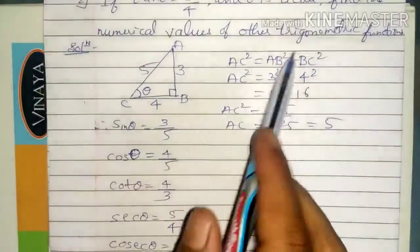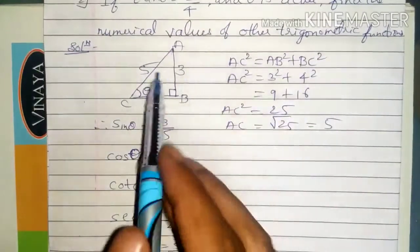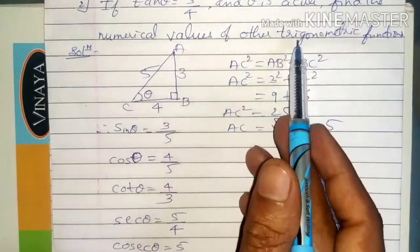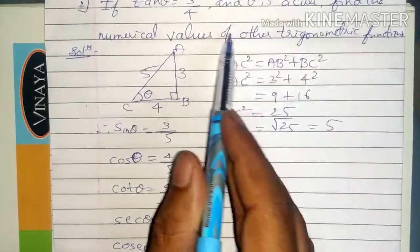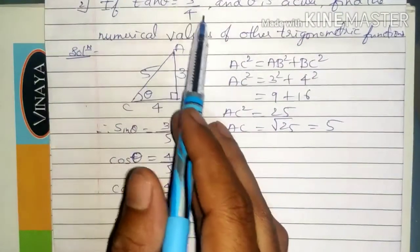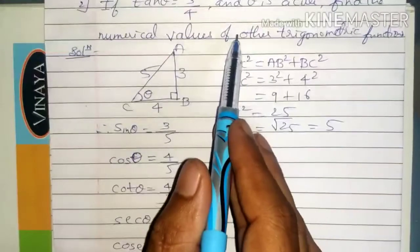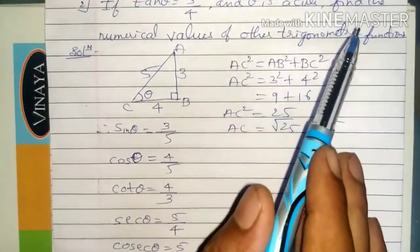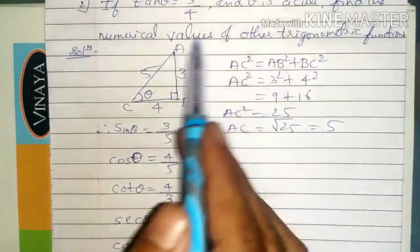This is how you find the other trigonometric values. In some problems, they may ask only two other trigonometric functions — for example, if tan theta is 3 by 4, find the value of sin theta and cos theta.